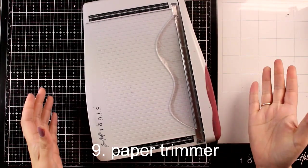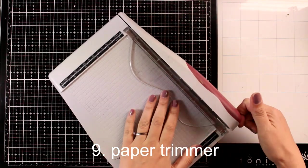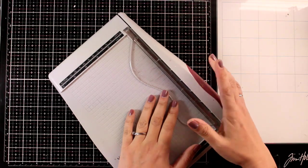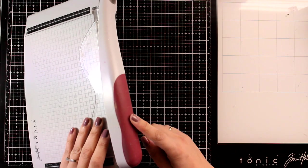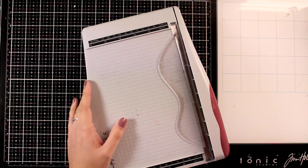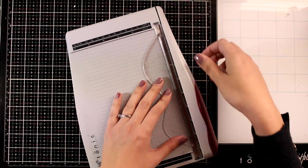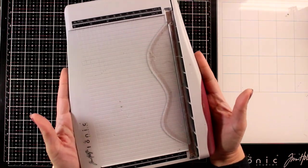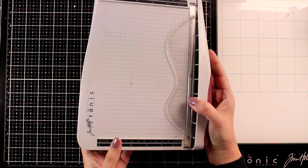Since we are discussing tools I grab on every project, I cannot leave behind my paper trimmer. My absolute favorite is the Comfort Trimmer by Tim Holtz. I've had this for years and it cuts all paper and cardstock like butter. The new one has a black handle instead of red. You get it once and it works for years.